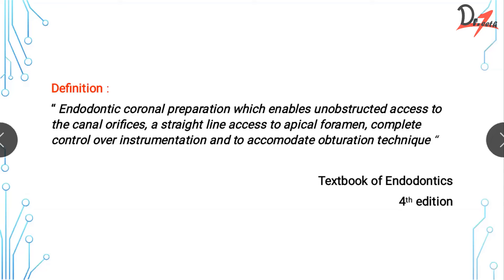Next is straight line access — if you connect the canal orifice to the apex there's a path like a tunnel, and that has to be straight. Any coronal tooth structure present will cause obstruction and prevent straight line access. Then comes complete control over instrumentation — this is the convenience form we learned in cavity preparation. Ultimately, obturation should be perfect, and that cannot happen without a good biomechanical preparation, which cannot happen without a good access opening.